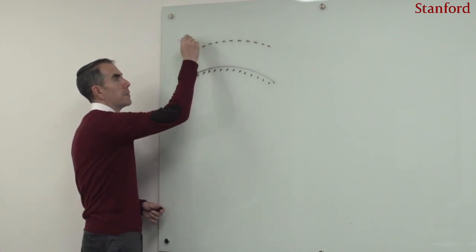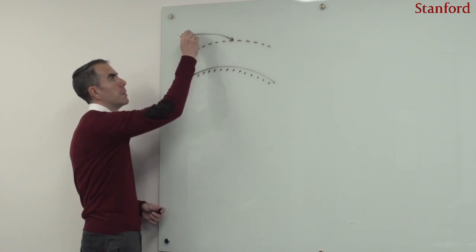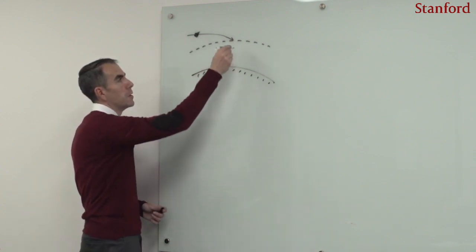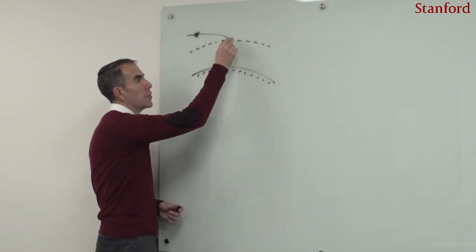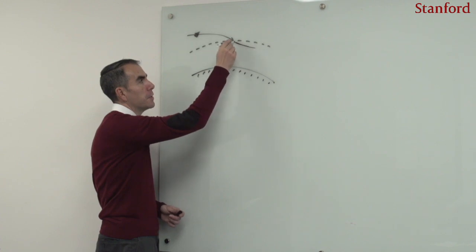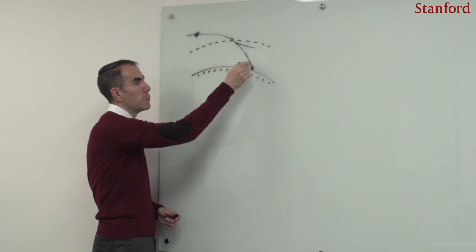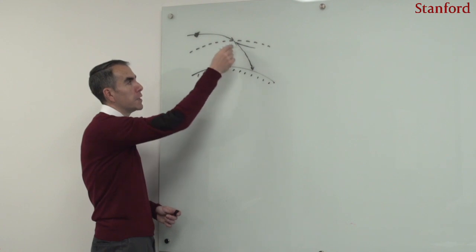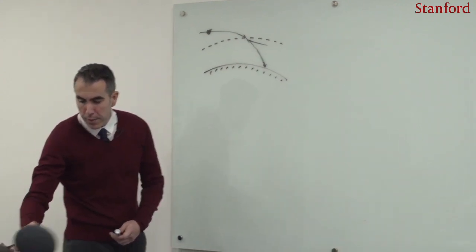In a ballistic re-entry, the spacecraft is approaching along an orbital trajectory and then re-enters. During the re-entry, the trajectory is going to get deflected—not only because of the presence of the atmosphere, even if it was ballistic, but also because many of these re-entry vehicles have lifting capabilities.